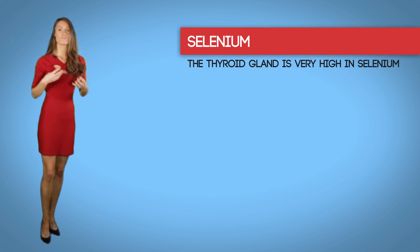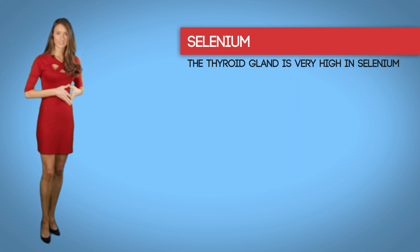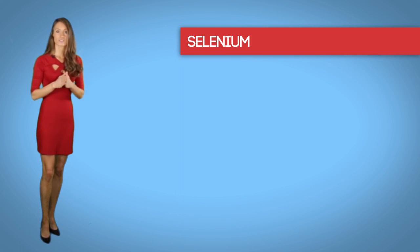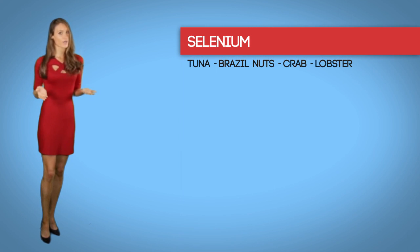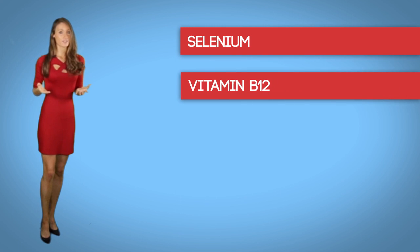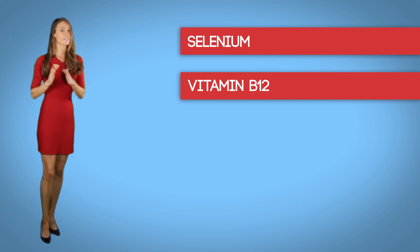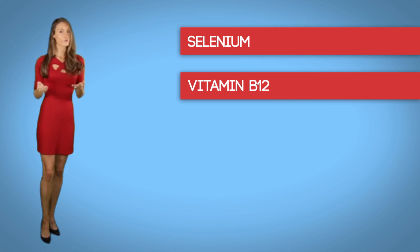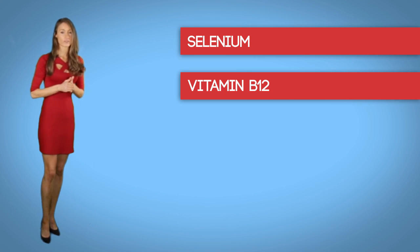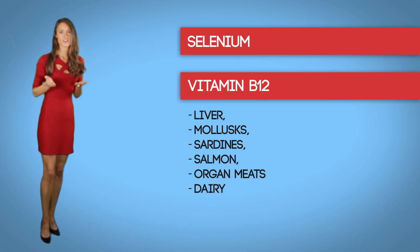The thyroid gland is very high in selenium, and it has been shown to be a necessary component of enzymes integral to thyroid function. Clients will benefit from having their selenium levels tested and incorporating selenium-rich foods into their diet, such as tuna, Brazil nuts, crab, and lobster. Studies have shown that many patients with thyroid disease experience a vitamin B12 deficiency.